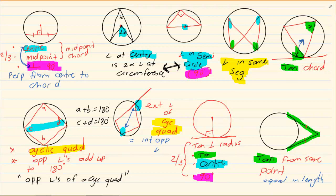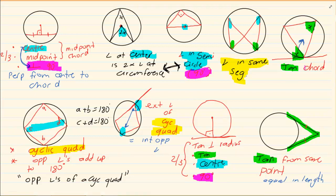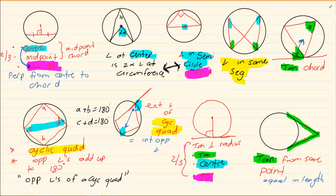Remember the theorems by their correct names: tangent perpendicular to radius, tangents from the same point, opposite angles of a cyclic quad, exterior angle of a cyclic quad, perpendicular from center to chord or midpoint chord, angles in the same segment, tan-chord theorem. Learn them correctly — don't create your own names. You must know all nine fast, and be able to group them: which three are for cyclic quad, which three for tangents, which three or four for center, which three for 90 degrees. If you can't rattle these nine theorems off, then you don't know your geometry.